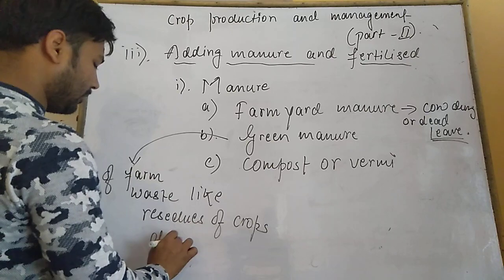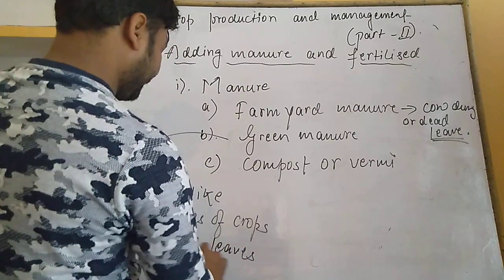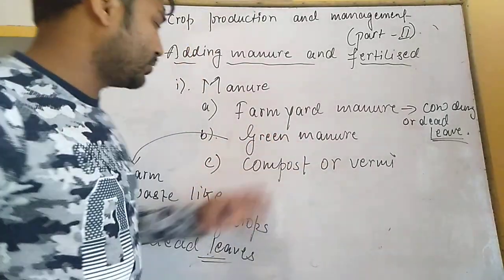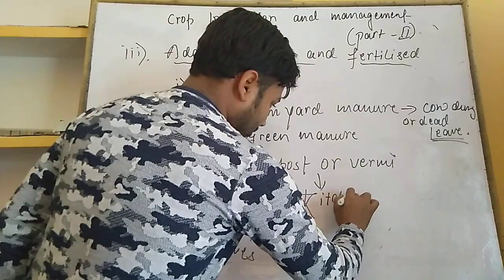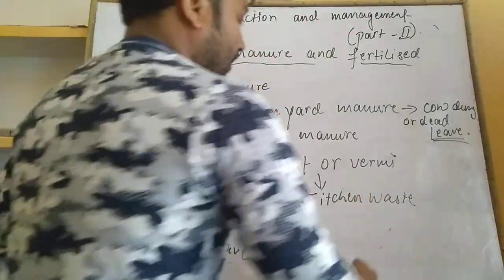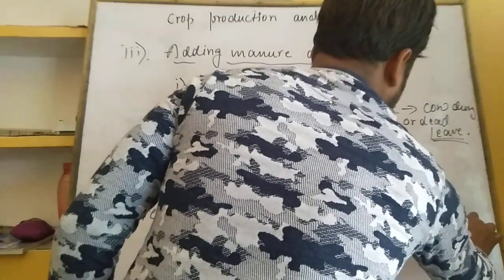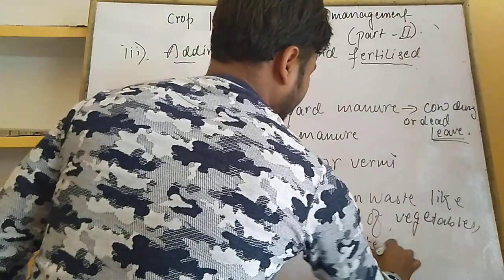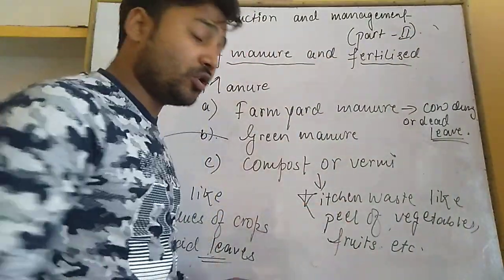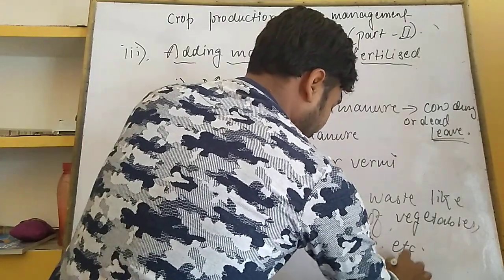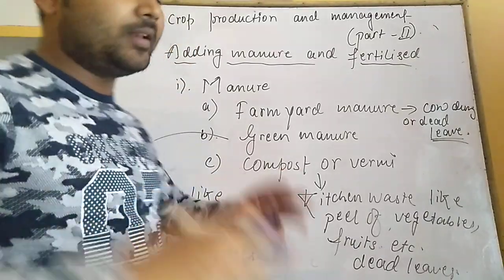Dead leaves are also involved in the manufacturing of green manure. Compost or vermicompost is manufactured by the decomposition of kitchen waste, like peels of vegetables, fruits, etc. We can also make vermicompost by the decomposition of dead leaves. These are the types of manure that we use in the crop field to increase the fertility of soil.